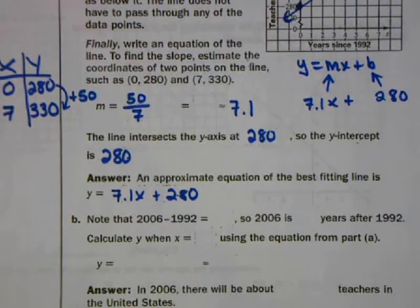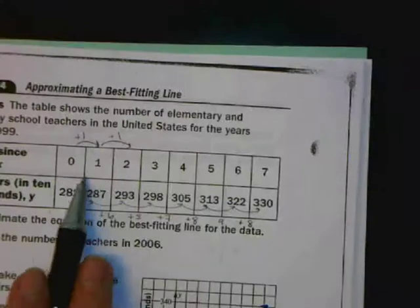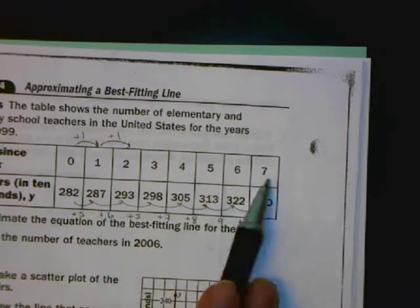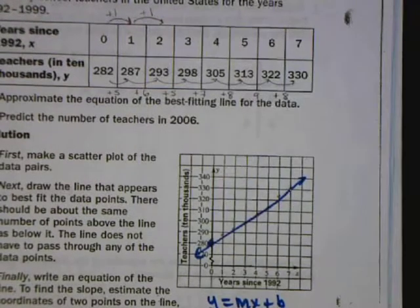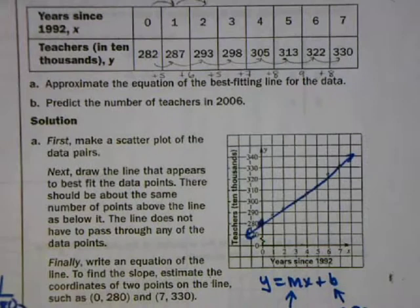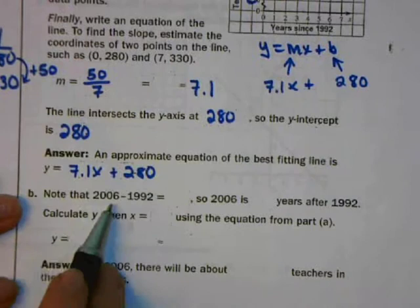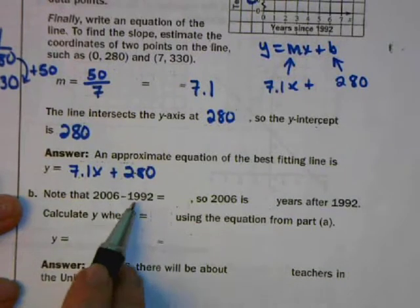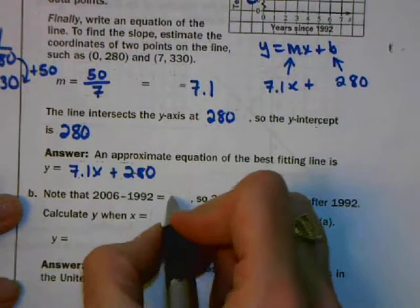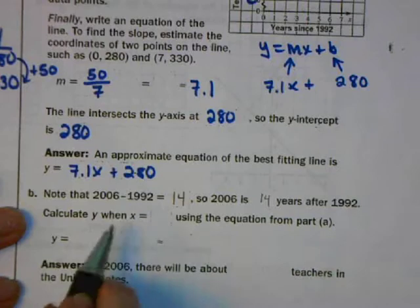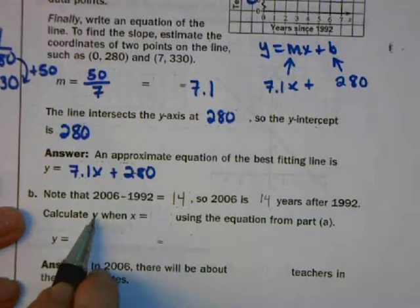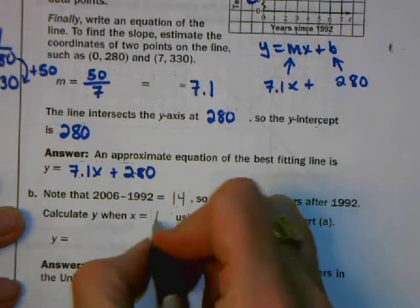Why is this useful? We can use this line to predict what's going to happen in the future. We don't know from this table how many teachers there are past 1999, but we can use the best fitting line to predict. It asks to predict the number of teachers in 2006. In 2006, the x value in our table is 2006 minus 1992, which equals 14. So 2006 is 14 years after 1992 — that's our x value.